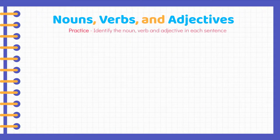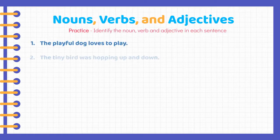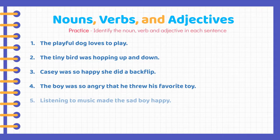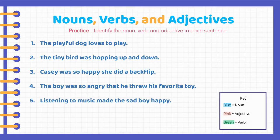Practice! Do the same thing as we did before. Here are the sentences. Use this key to highlight the words — blue for the nouns, pink for the adjectives, and green for the verbs. Pause the video here and see if you can figure it out.